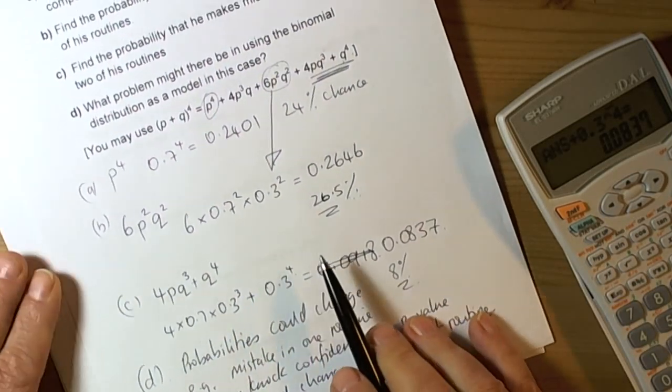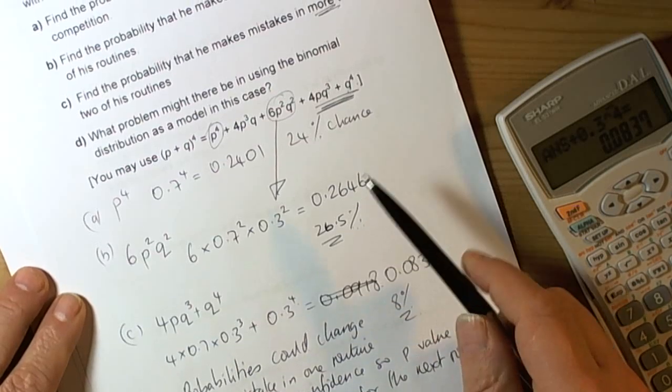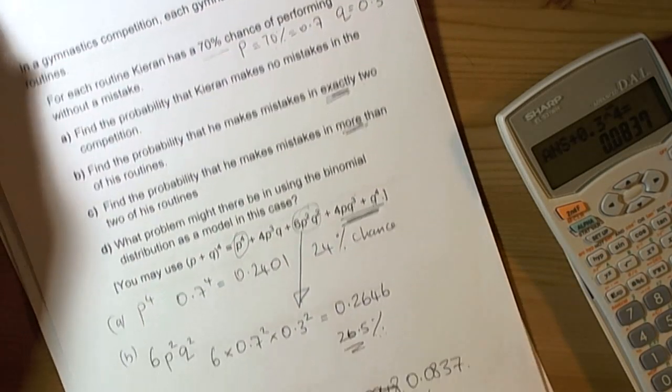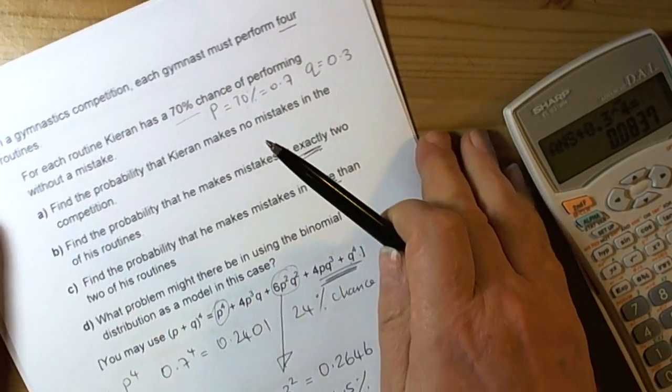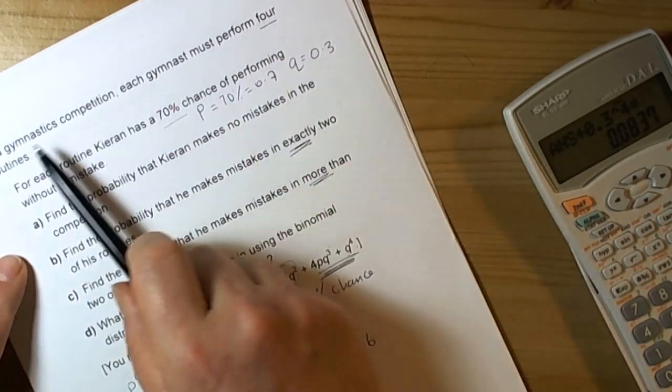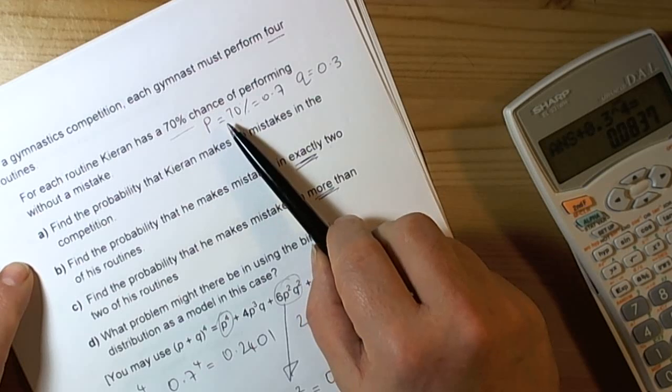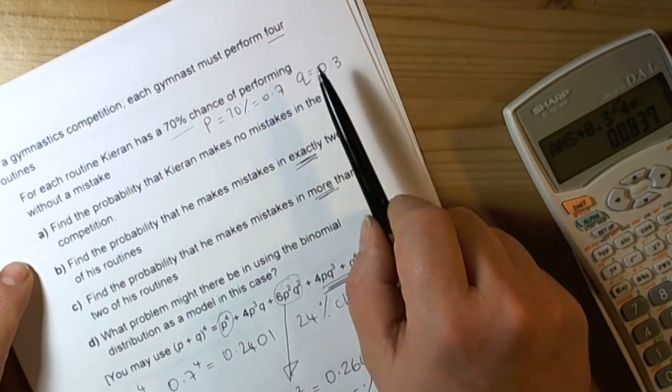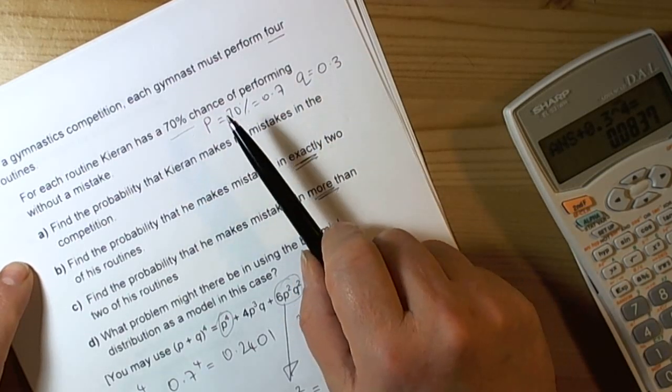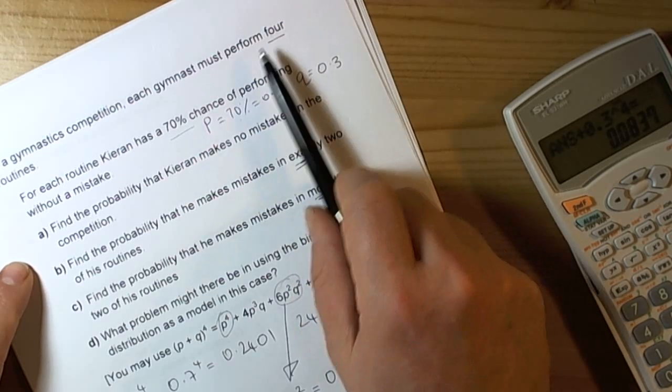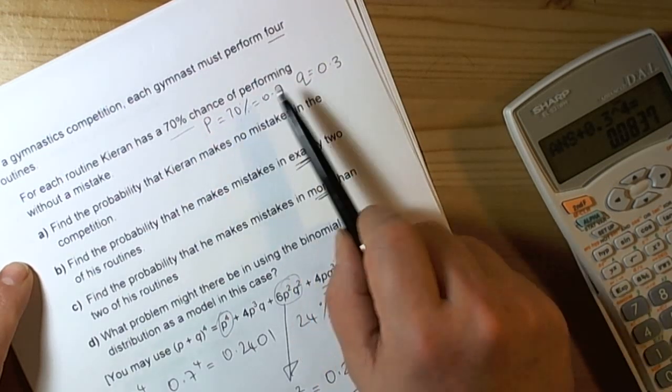That's a quick review of the lesson on binomial distribution. Remember the key ideas: the binomial distribution is for a fixed number of trials, so four routines in this case. There are only two probabilities: either a success probability or a fail probability. And we assume that each time the trials take place, the probabilities remain fixed.